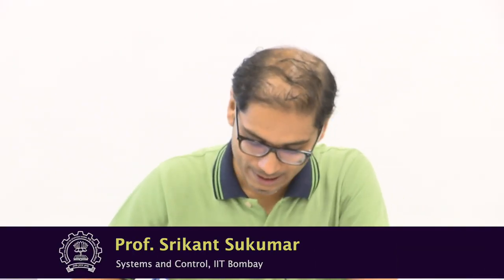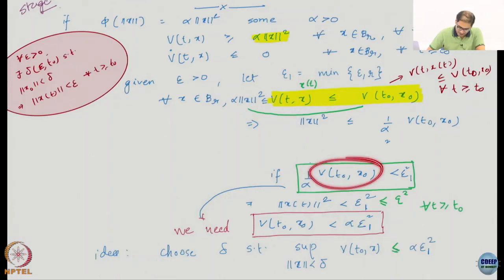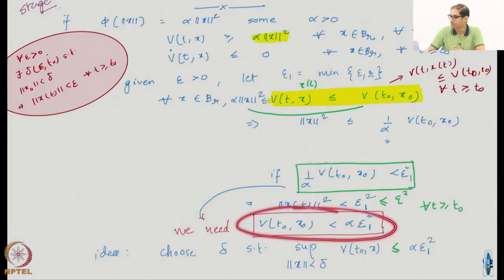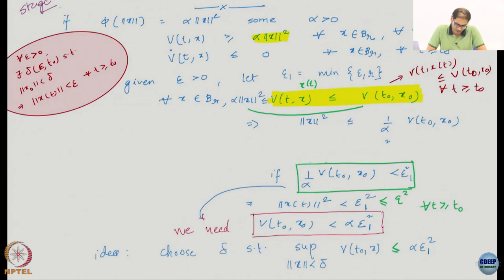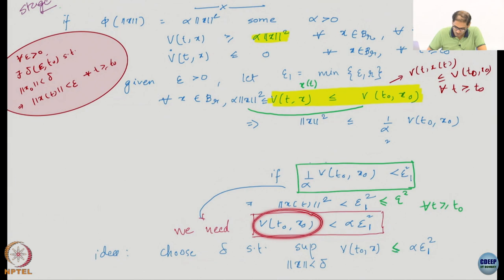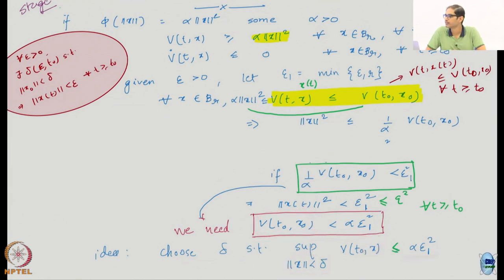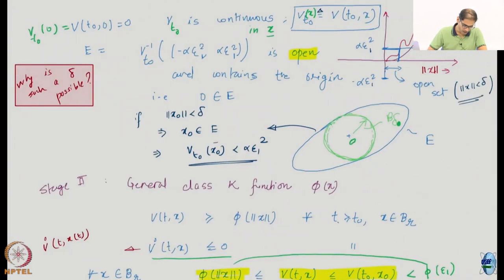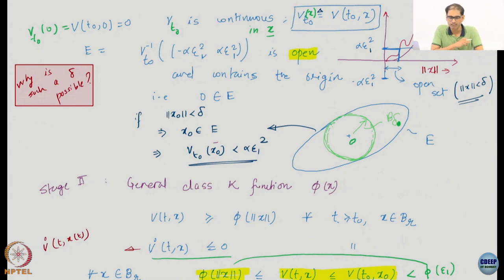You have to choose this v_t0, x0 such that this happens. I am claiming it is possible to choose a delta such that the supremum of this function over norm less than delta does satisfy this. So how do you claim this? This requires a little bit of real analysis knowledge, but it is not too complicated to grasp.